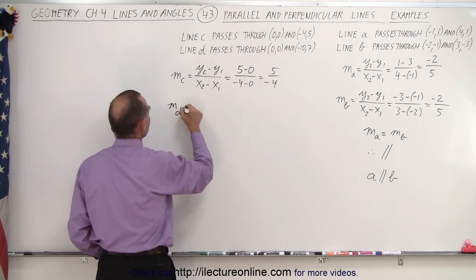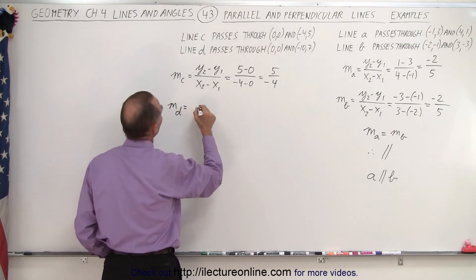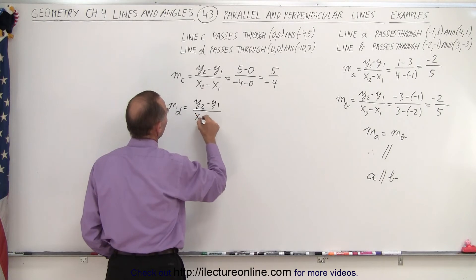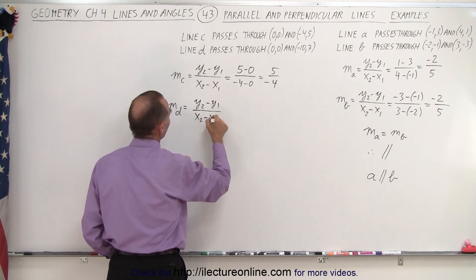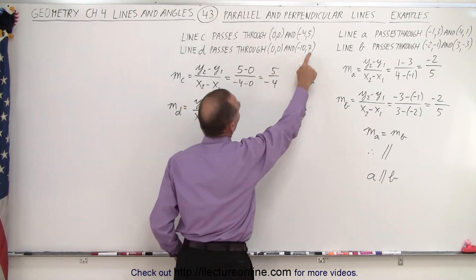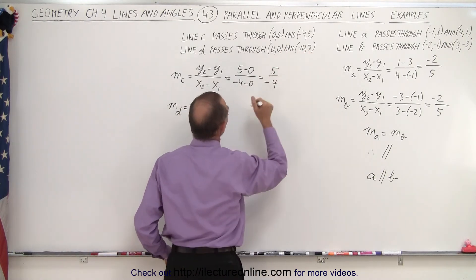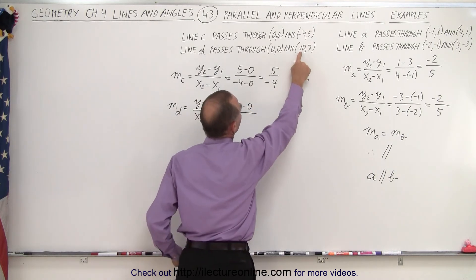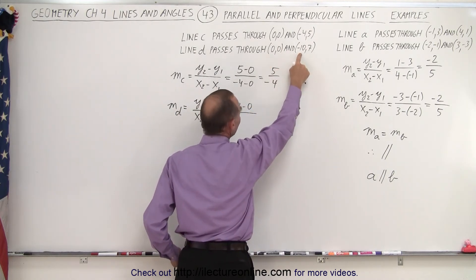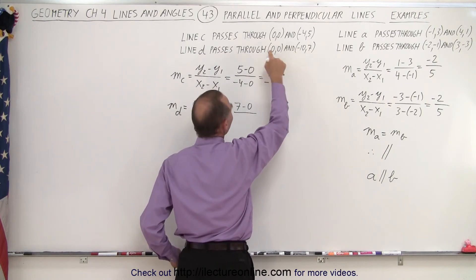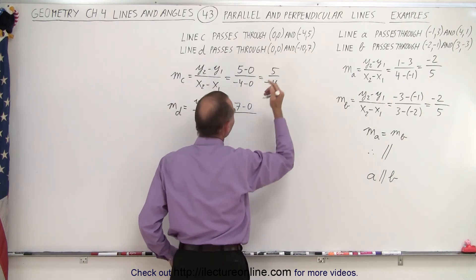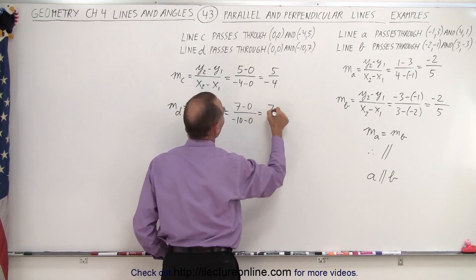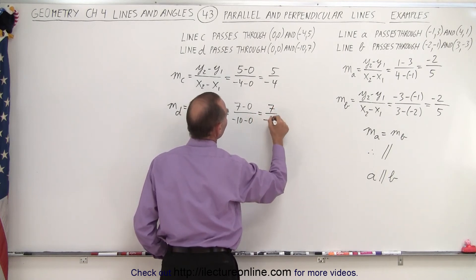The slope for line D is equal to Y2 minus Y1 divided by X2 minus X1. Let's call this Y2 and this Y1, so we end up with 7 minus 0 over negative 10 minus 0. So this is 7 divided by negative 10.